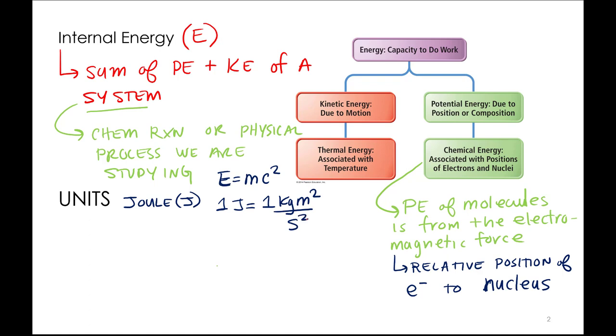So one joule is one kilogram meter squared per second squared. That's not as intuitive as other units of energy, but that's where it comes from.